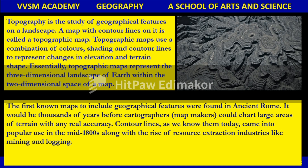The topographic map represents the three-dimensional landscape of the earth within the two-dimensional space of a map. The first known maps to include geographical features were found in ancient Rome. It would be thousands of years before cartographers — map makers — could chart large areas of terrain with any real accuracy. Contour lines as we know them today came into popular use in the mid-1800s along with the rise of resource extraction industries like mining and logging.